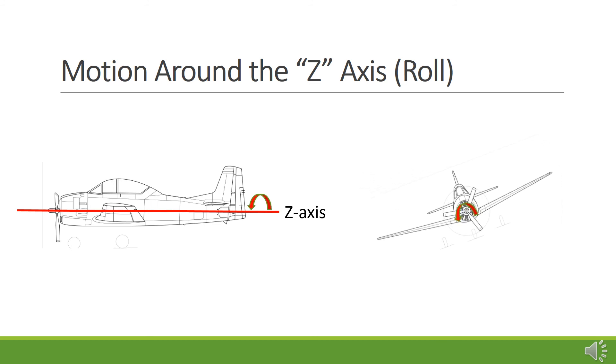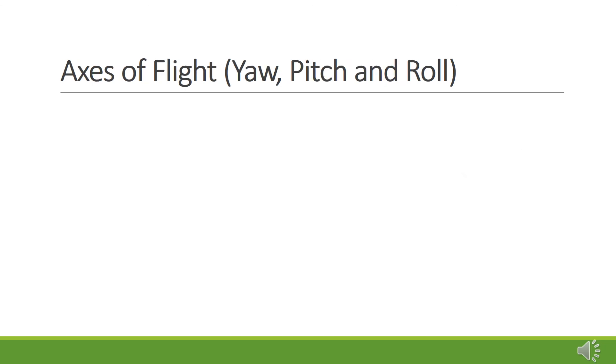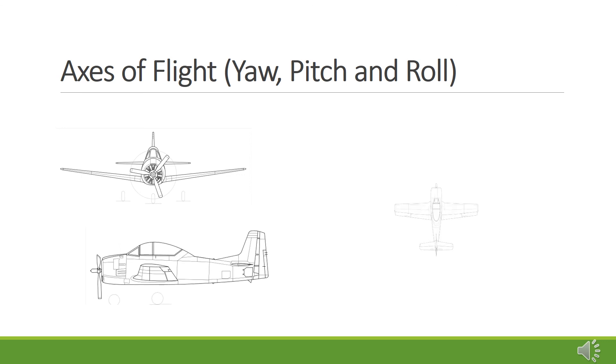To make an aircraft change direction, however, would require changes in more than one dimension. The flight of an aircraft takes place in three dimensions, so aircraft control surfaces must be able to provide for movement in each.